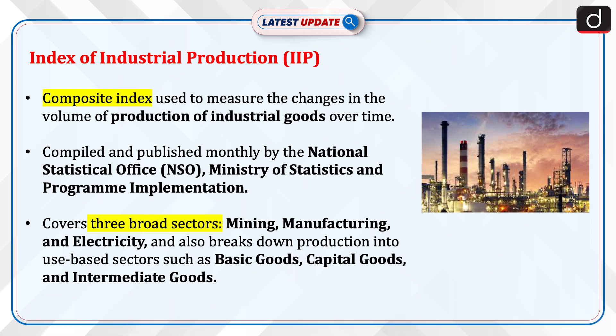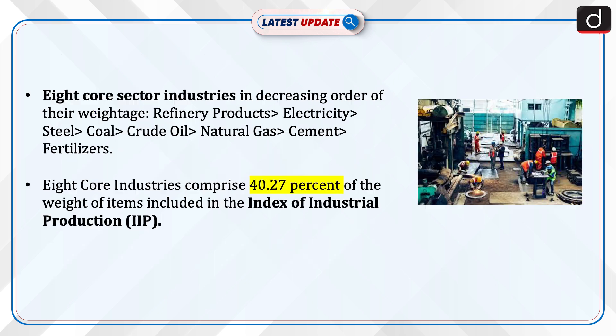It covers three broad sectors — mining, manufacturing, and electricity — and also breaks down production into use-based sectors such as basic goods, capital goods, and intermediate goods.